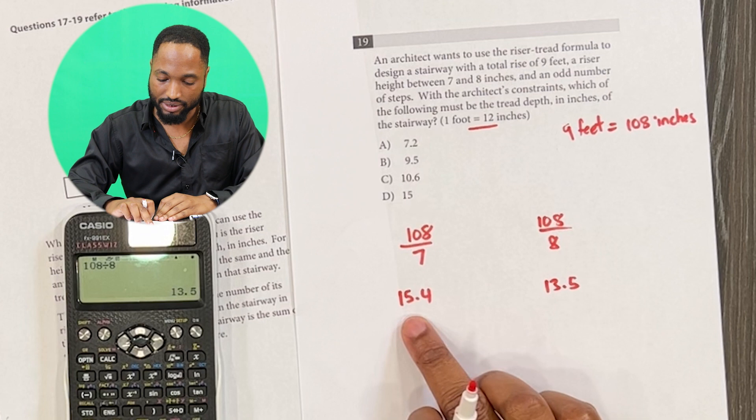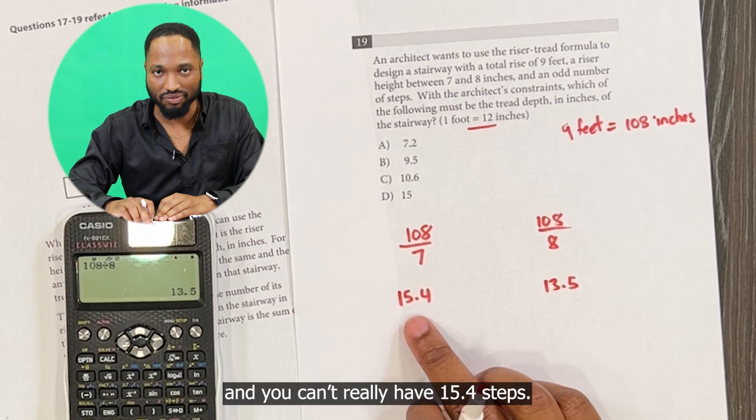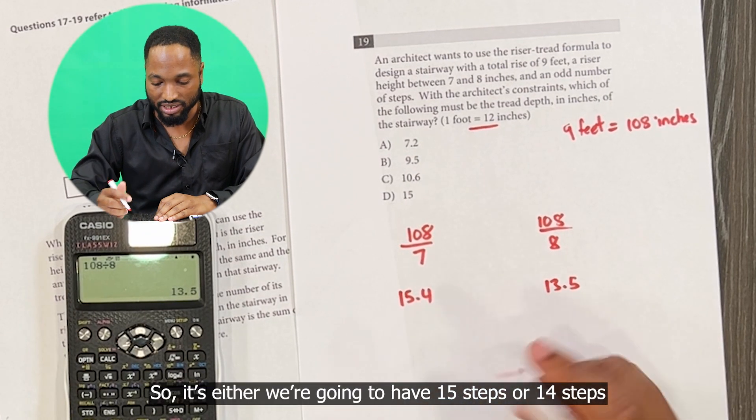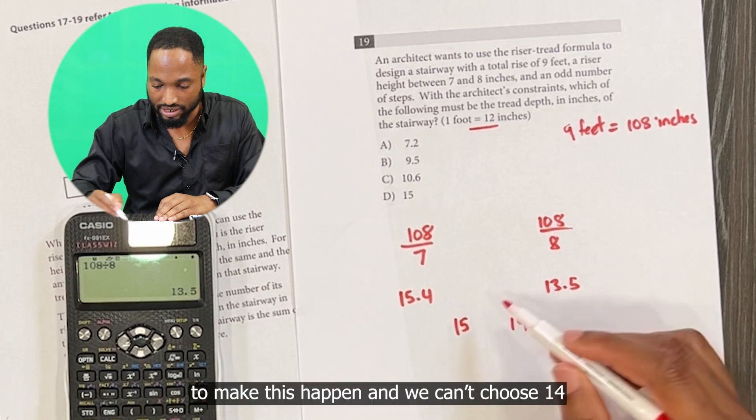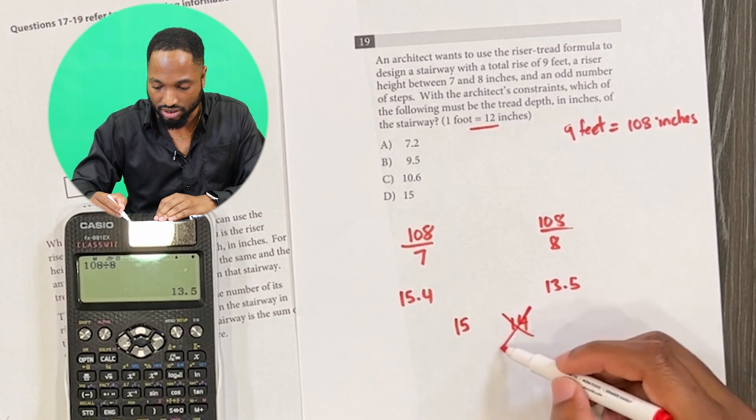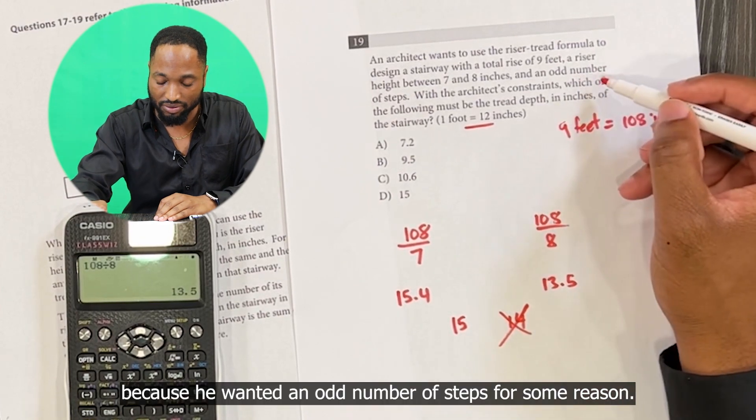This number here represents the number of steps, and you can't really have 15.4 steps. So it's either we're gonna have 15 steps or 14 steps to make this happen. And we can't choose 14 because he wanted an odd number of steps for some reason.